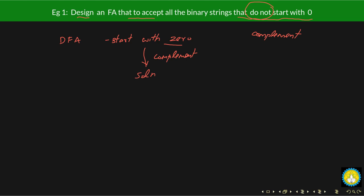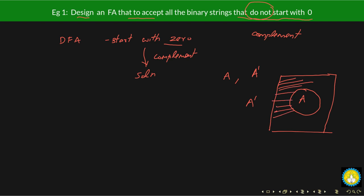You might have already studied about complements in discrete mathematics. In set theory, you studied how to take the complement of a given set. Suppose I have a set called A and I want to find its complement — complements are represented by A dash. In the Venn diagram, if this is set A and this is my universal set represented by a big rectangle, then A complement is everything outside of A.